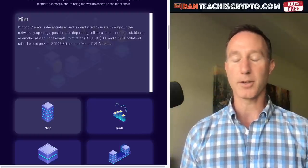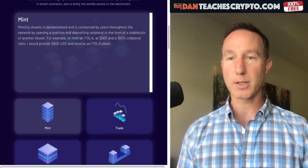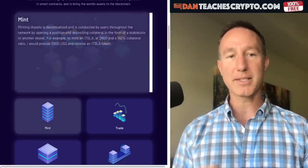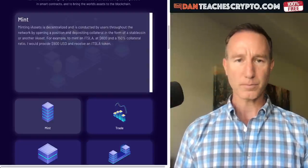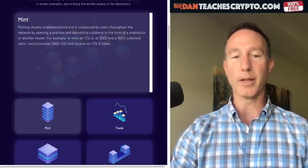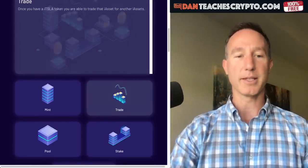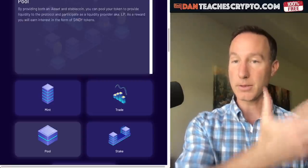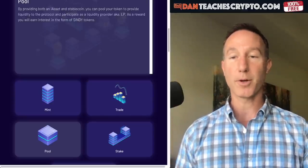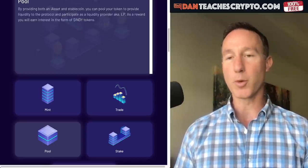They use the example of an iTSLA — Tesla stock. Some people don't have access to that, and they just want to do things on the blockchain for synthetic assets. To mint an iTSLA at $600, you need a 150% collateral ratio. You would provide $900 and receive a TSLA token. Then you can trade it for all different types of assets on this synthetic network. If you provide both an iAsset — like iTSLA — and a stablecoin, you can become a liquidity provider and earn interest in the Indy token.